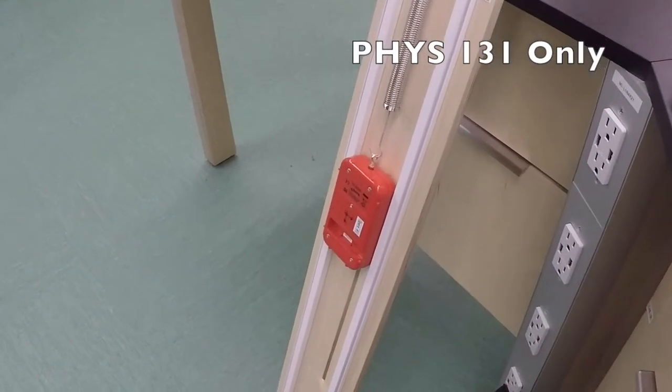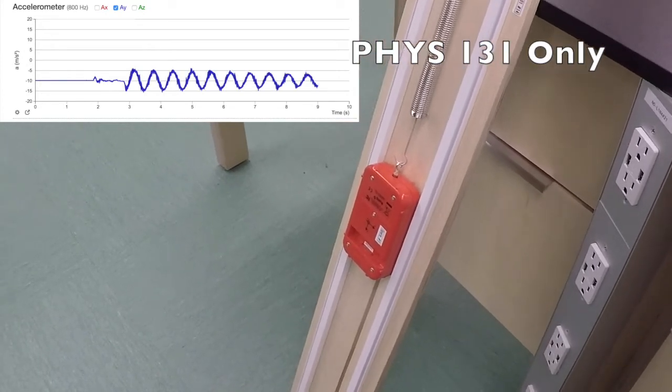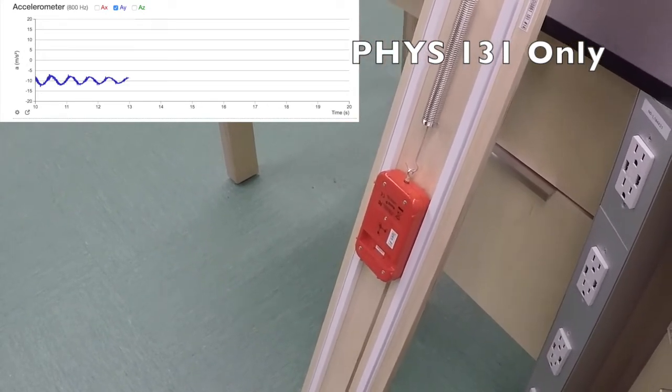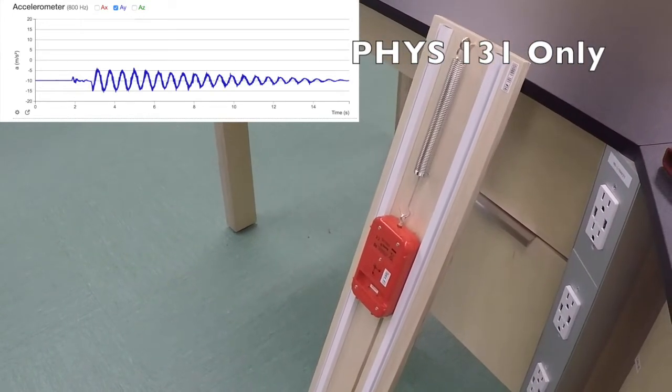This will produce a similar oscillatory motion as before, but with the amplitude becoming smaller and smaller. By looking at how the amplitude reduces over time, you should be able to extract the damping coefficient.